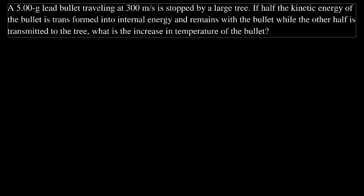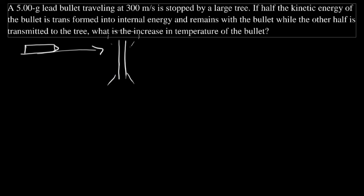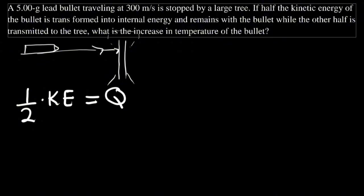Next question: a 5 gram lead bullet traveling at 300 meters per second is stopped by a large tree. Half the kinetic energy is transformed into internal energy and remains with the bullet, while the other half is transmitted to the tree. What is the increase in temperature of the bullet?